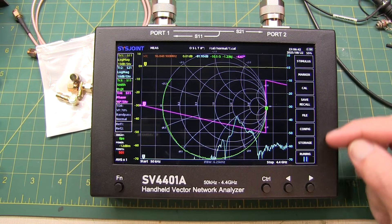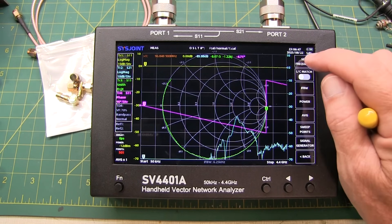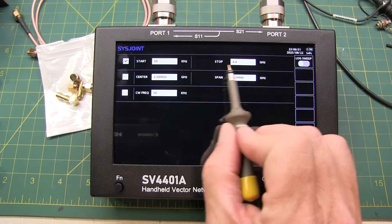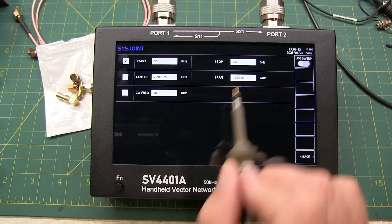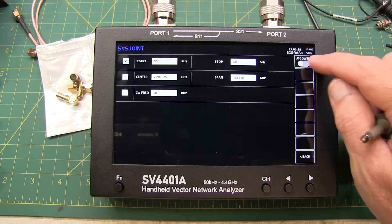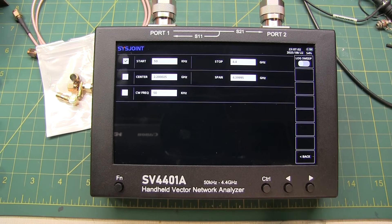Now the main menus on the right all kind of start at this level. The stimulus menu will give you the ability now of setting the frequency through either setting the start and stop, or the center and span, or just set a CW frequency if you're doing some CW testing. And you can even set up a log sweep. You hit back to get back to the main menu.